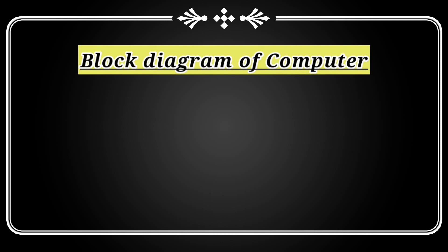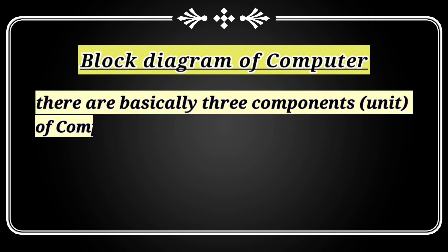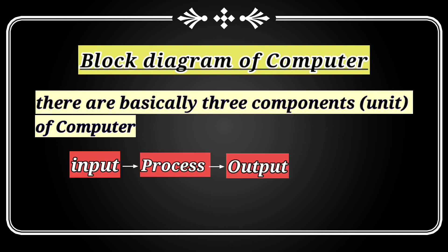Block diagram of computer. There are basically three component units of a computer: input, process, and output.